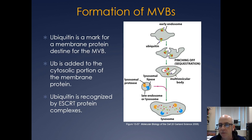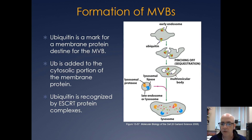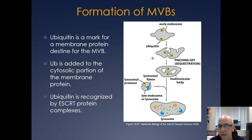Then you have your multivesicular body and that will fuse with the lysosome, and eventually the lipases and the proteases and all the other acid hydrolases will go in and cleave everything up. Now the ubiquitin is actually recognized by this protein called ESCRT, and we'll see how the ESCRT proteins work in a second to generate these invaginated vesicles.